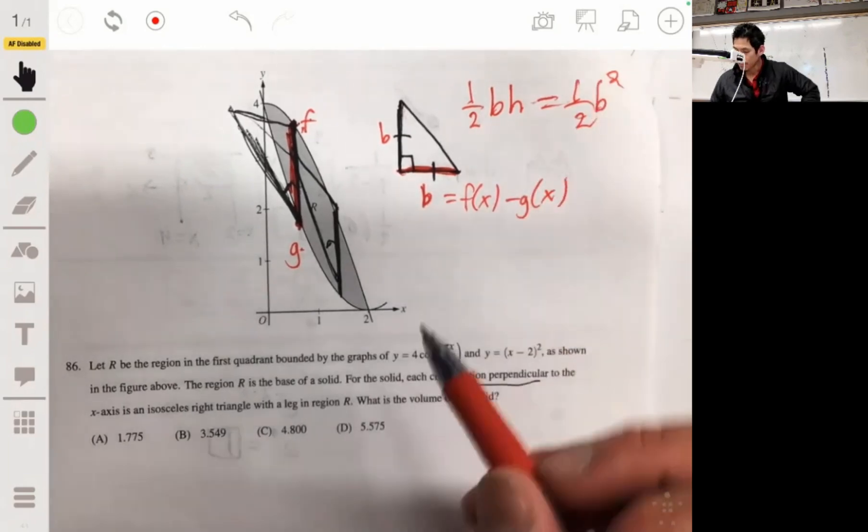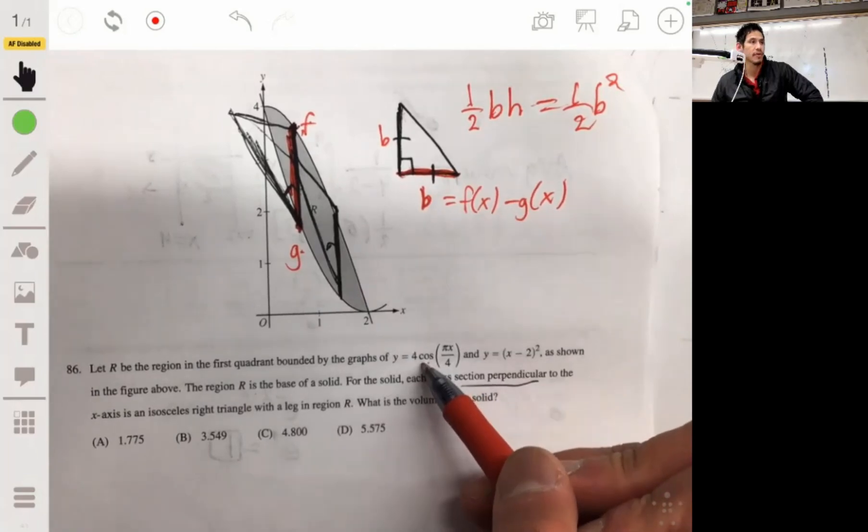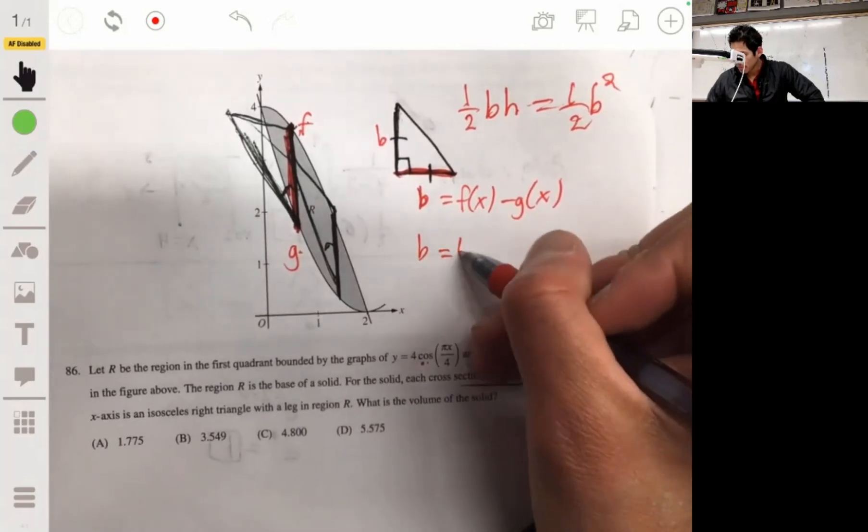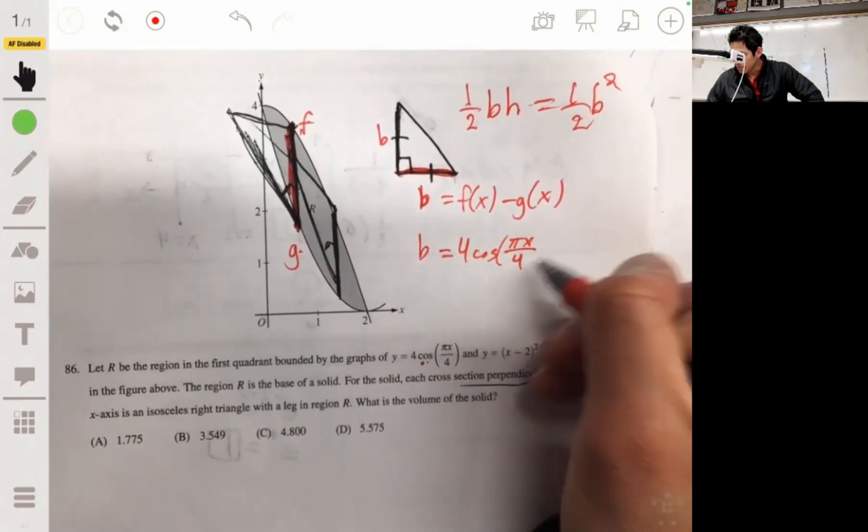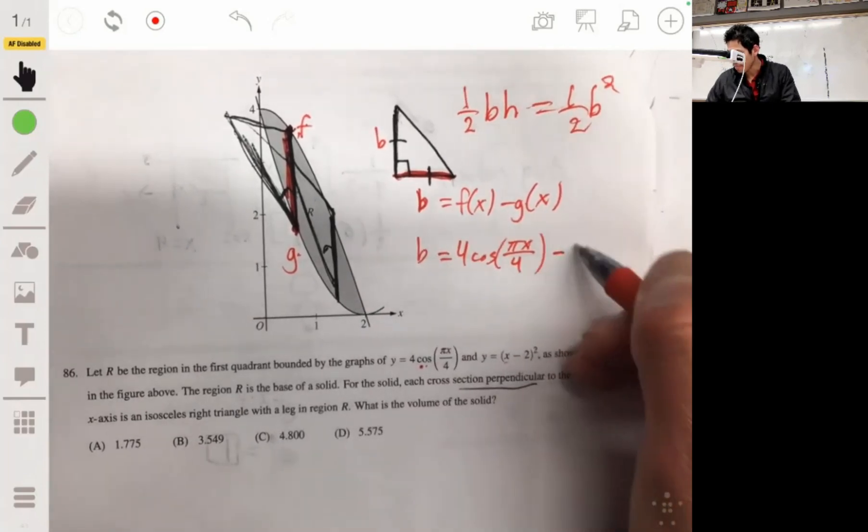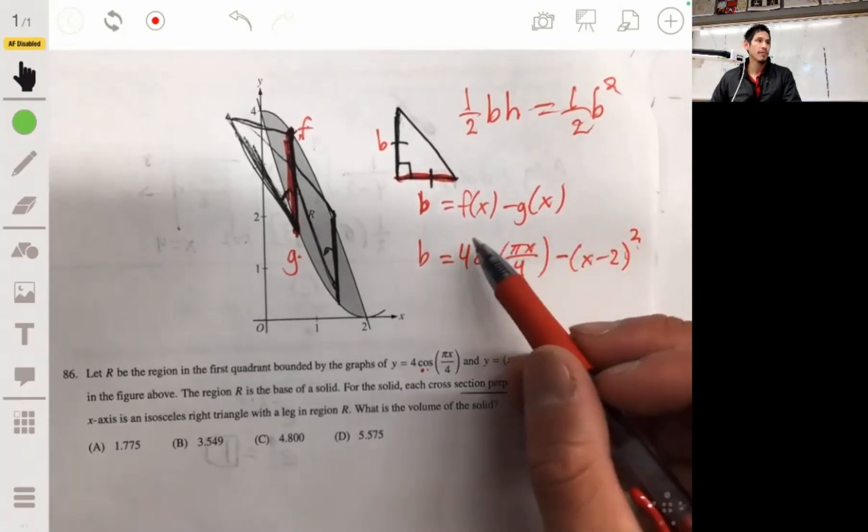Now, we're told that F(x) would be 4 cosine pi, that's the one on top. So B would then be 4 times cosine pi x over 4, and then G(x) would be (x minus 2) squared. That'll be your base.